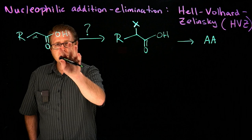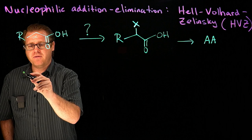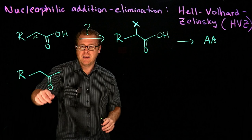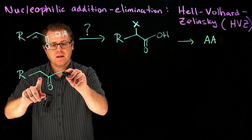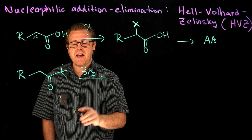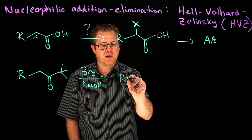Now, when we take a look at this, what reagents could we use to put a halogen on an alpha carbon? Hopefully something pops into your mind. Instead of a carboxylic acid, what if we had a ketone? What if I treated that with elemental bromine under some base present? What would we generate?